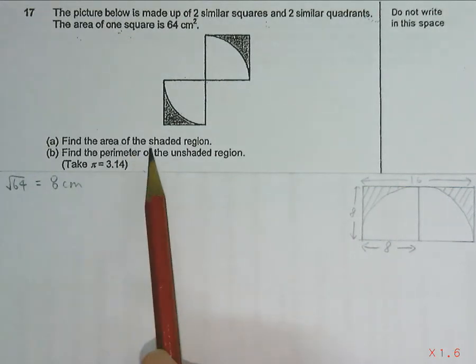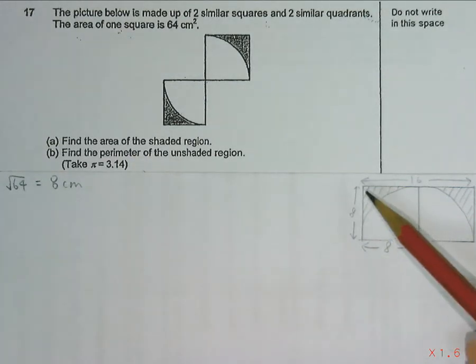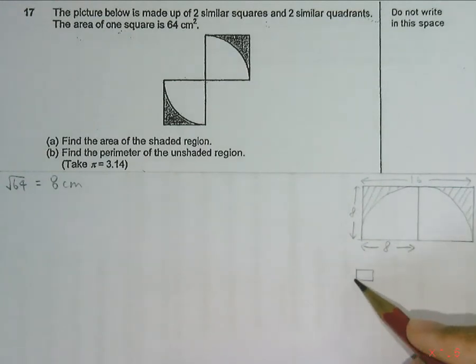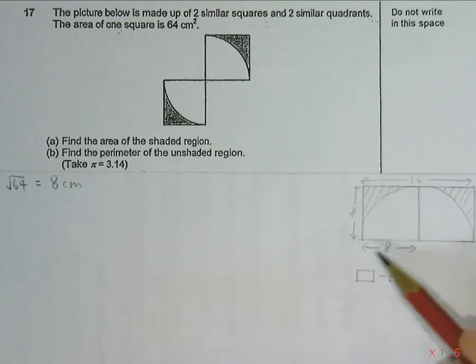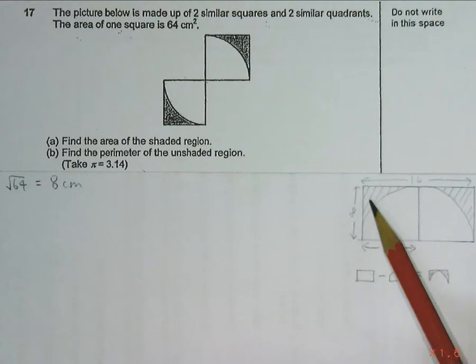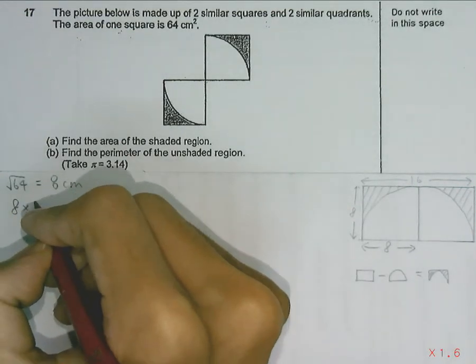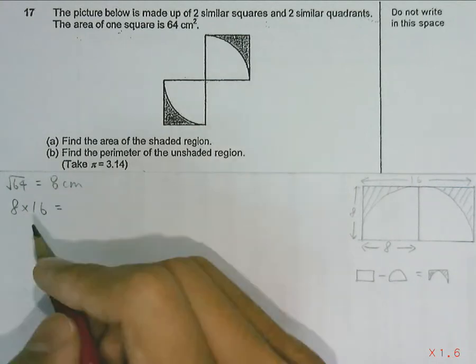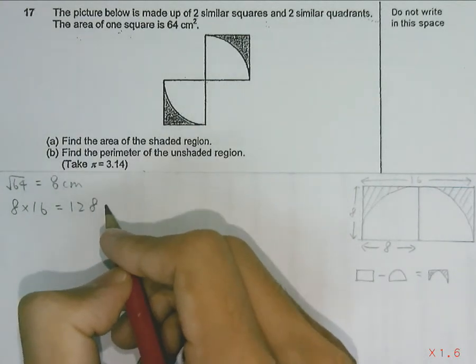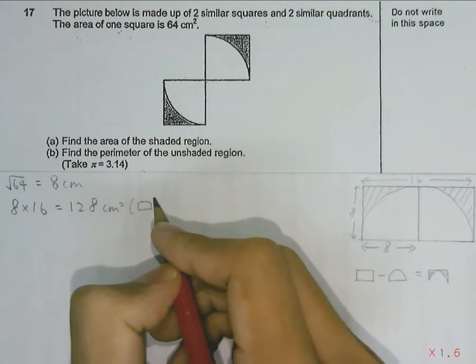Now in order to find the area of the shaded region, we will take the area of the rectangle, subtracting off the area of the semicircle. And that will leave us with the area of the shaded region. So the area of the rectangle can be very easily found by 8 times 16, which gives us 128 cm².